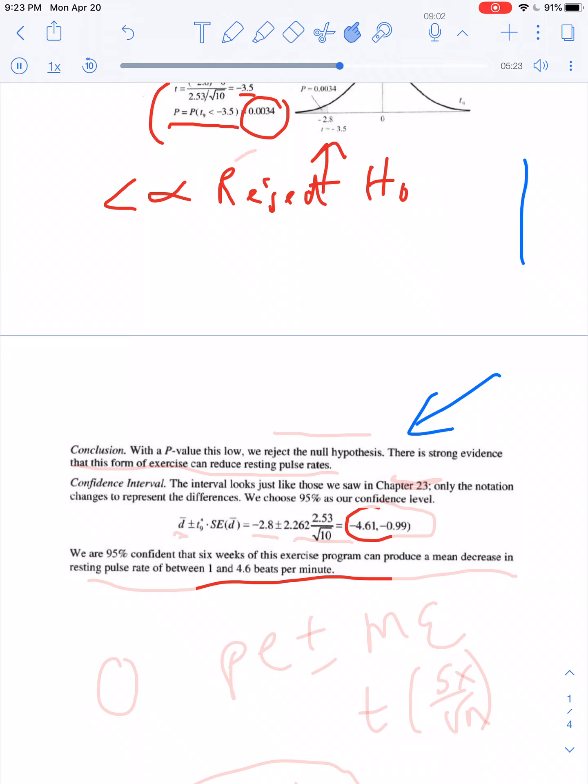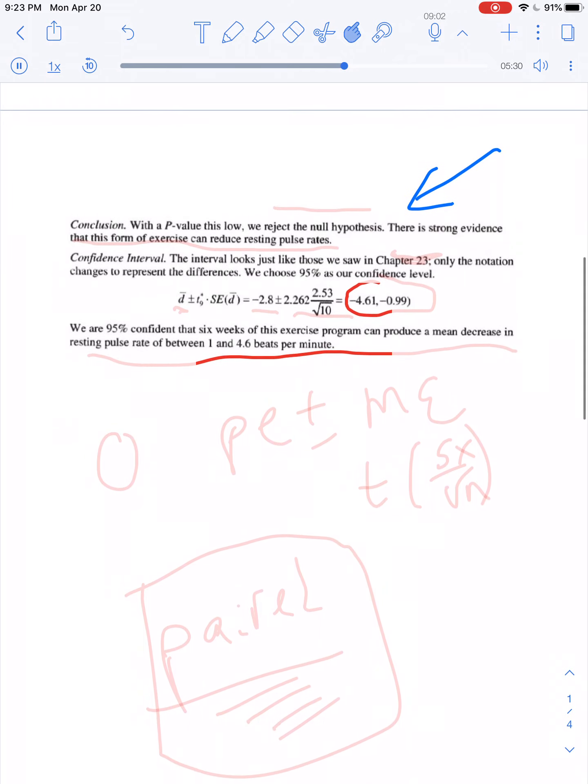Now, we can back this up with the confidence interval. So, the book always likes to do these on the AP exam, like doing them as well. We have a very low p-value, so we reject the null. There's strong evidence that from this form of exercise, you can reduce pulse rates. We backed it up with a confidence interval that we did in earlier chapters.